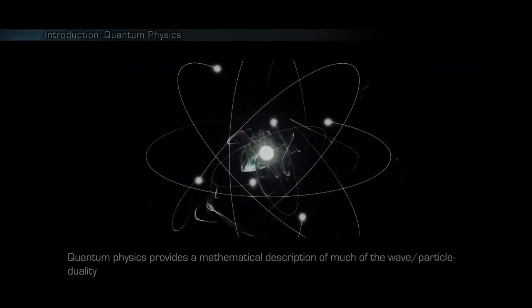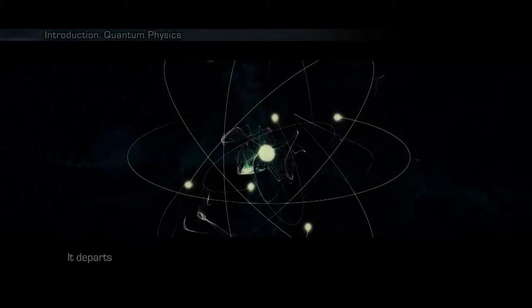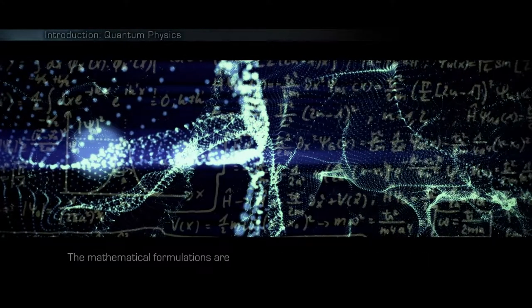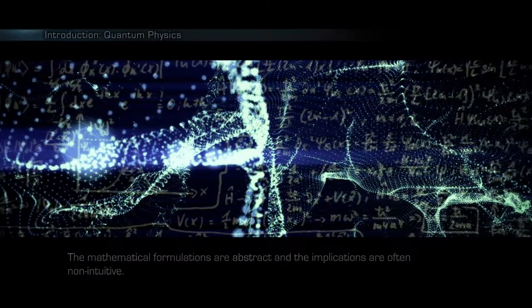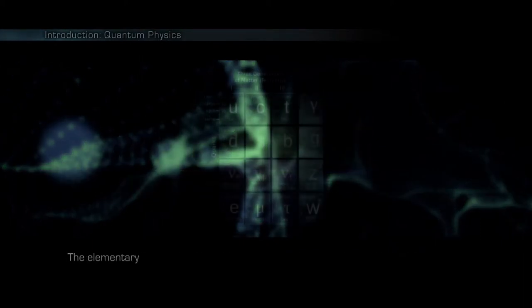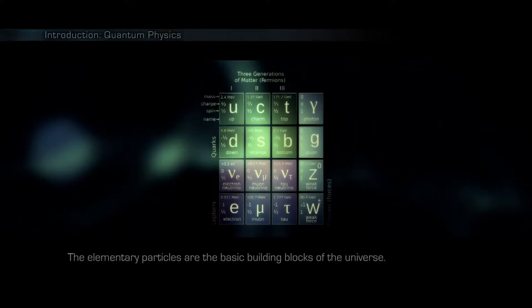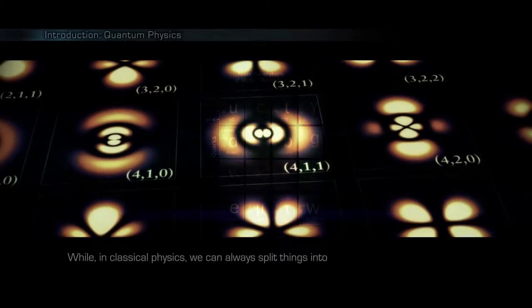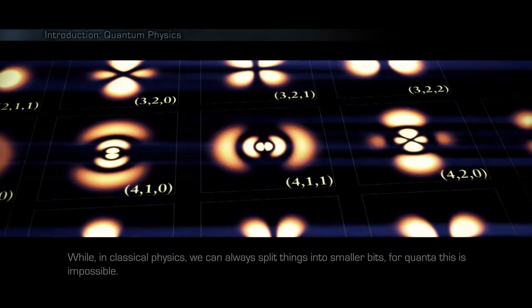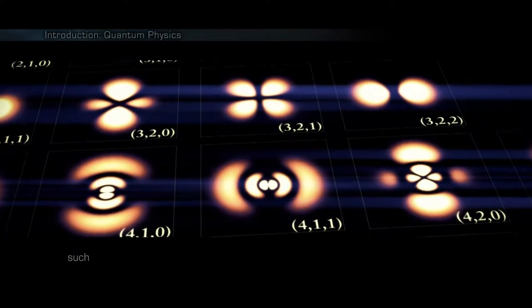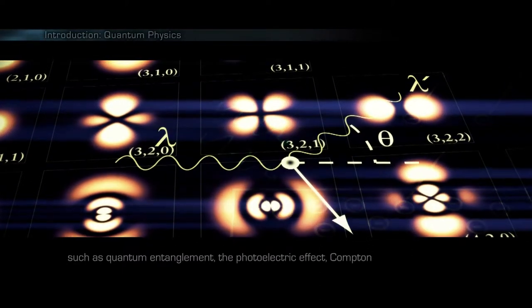Quantum physics provides a mathematical description of much of the wave-particle duality and interactions of energy and matter. It departs from classical physics primarily at the atomic and subatomic scales. The mathematical formulations are abstract and the implications are often non-intuitive. A quantum is the minimum unit of any physical entity involved in an interaction. The elementary particles are the basic building blocks of the universe. While in classical physics we can always split things into smaller bits, for quanta this is impossible. As a result, the quantum world presents many unique phenomena that cannot be explained through classical laws such as quantum entanglement, the photoelectric effect, Compton scattering and many more.